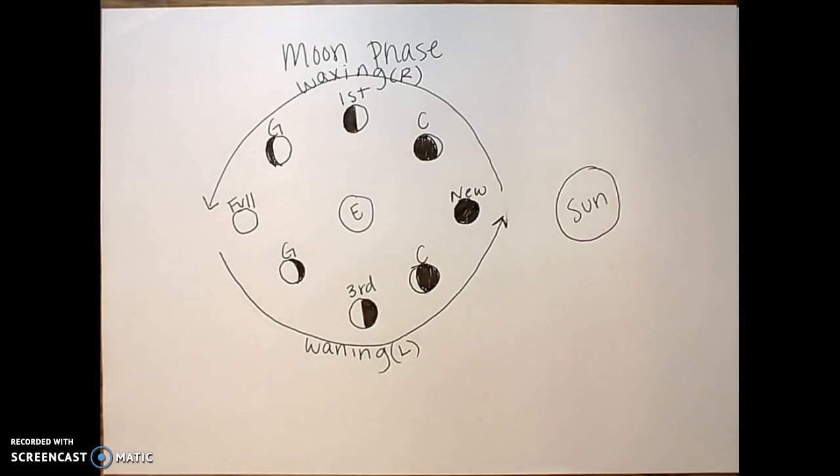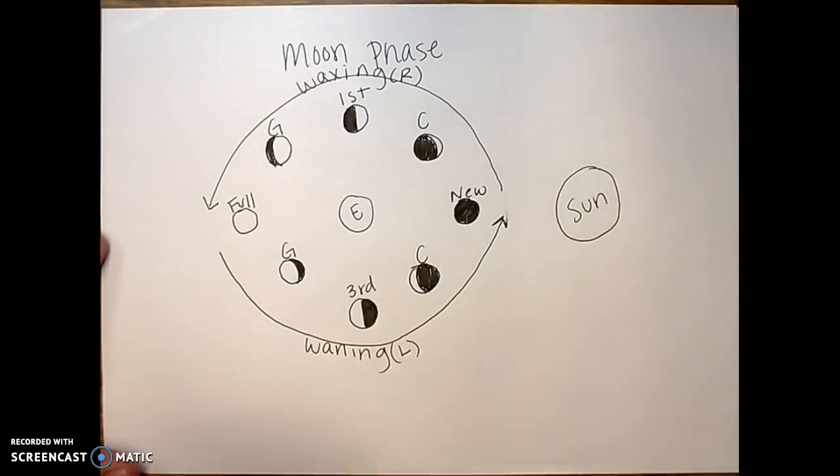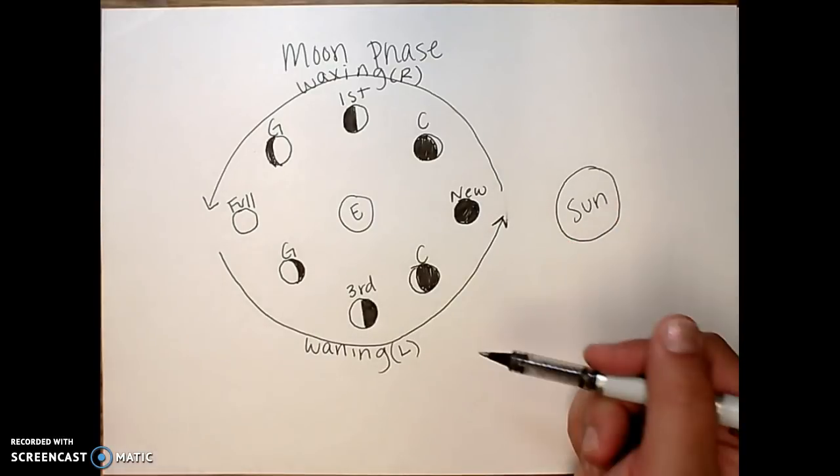Okay, so what I can see here is that when I'm waxing, all my lights are on the right. When I'm waning, all my lights are on the left. I can also remember that whatever's happening on the right side of the phase is going to continue happening.